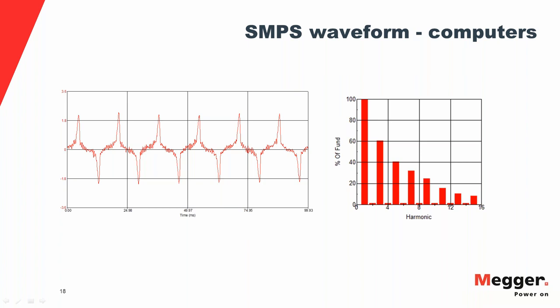Looking at a real waveform from a computer, there is strong similarity to the simulation: sharp current pulses caused by the capacitor in the switch mode power supply. The harmonic spectrum on the right shows the magnitude of each harmonic order relative to the fundamental (at 100%). The spectrum shows mainly odd harmonics — third, fifth, seventh, ninth, eleventh — with magnitude decreasing as order increases. Though the current drawn by one computer peaks at about two amps, a building with 50 to 100 computers would have significant zero sequence harmonic current in the transformer neutral.